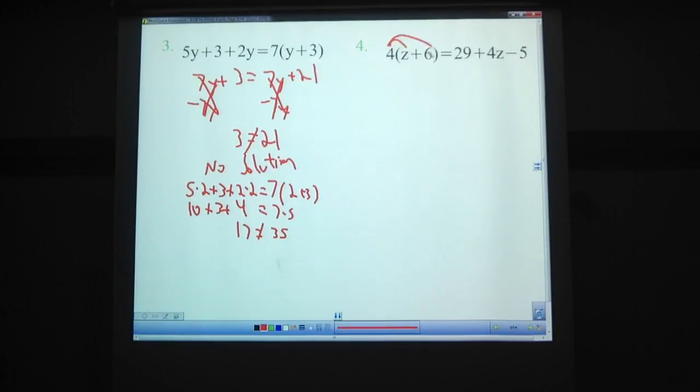Here. Multiply that out. 4z plus 6 equals 29 plus 4z minus 5. Wait. Subtract those. 29 minus 5 is 24. Oh, that's not 4z plus... Oh, my gosh. I am all types of bad at this problem, apparently. 4z plus 24. Subtract 4z from each side. 24 equals 24. Check.